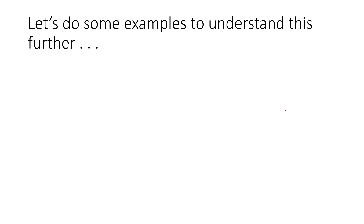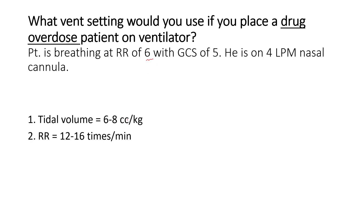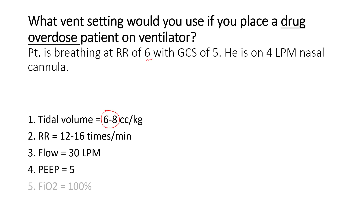Let's understand this with some examples. We have a patient with drug overdose with a respiratory rate of 6. For this patient you can start at 6 to 8 cc tidal volume, a normal respiratory rate, normal flow rate, a PEEP of 5, and FiO2 of 100%.